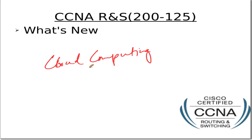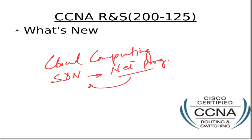Cloud computing and software defined networks — the term you will find in the exam blueprint is network programmability, which is another industry term used for SDN. Cisco is basically trying to emphasize that besides being a techie, you need to understand the bigger picture as well. You will also be learning about BGP, but only at a very basic level for CCNA, so it will be easy.